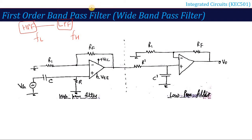So the first order band pass filter circuit is made by a combination of a high pass filter and a low pass filter. The circuit is: first order high pass filter circuit, then first order low pass filter circuit, where the output of the high pass filter is directly connected to the input of the low pass filter. Components are labeled C, R for the high pass stage and R1, RF for the low pass stage.